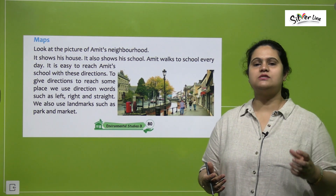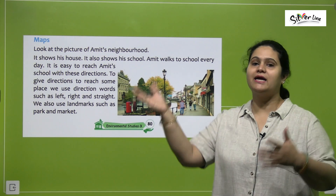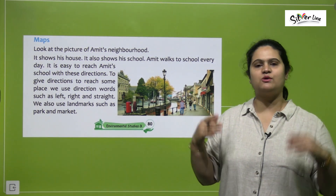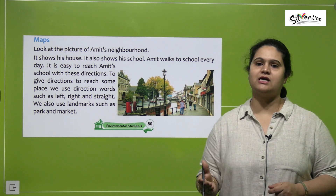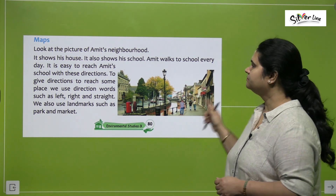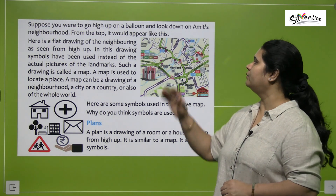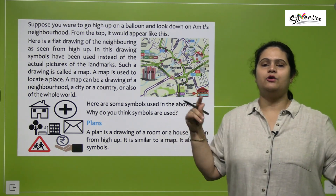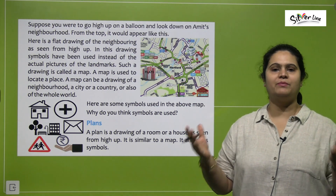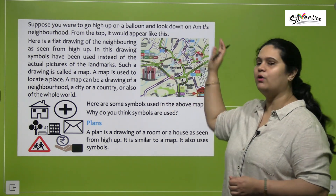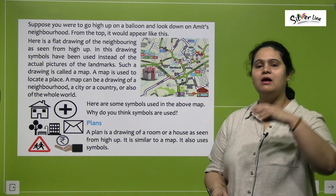Aur hum explain karte time, we use certain landmarks. Landmarks kya hote hain — jaise kuch parks hain. Toh aap bata sakte hain ki is park ke paas hai, us market ke close by hai, us market ko cross karke you can take a left. Suppose you were to go high up on a balloon and look down on Amit's neighborhood. From the top, it would appear like this — agar aap ek hot air balloon mein upar jate hain, aur upar se Amit ke neighborhood ko view karte hain, top view agar uska lete hain, toh aap kya dekhenge? Kuch is tarah ka top view uske neighborhood ka dikhai dega.